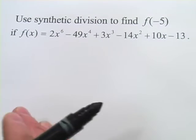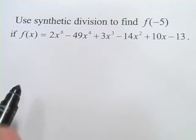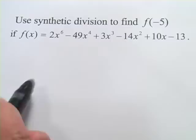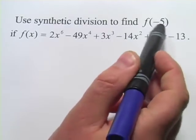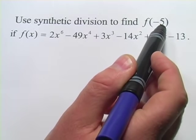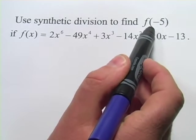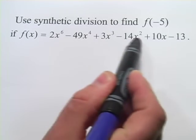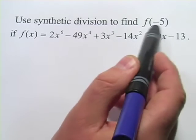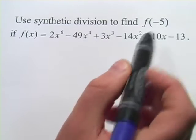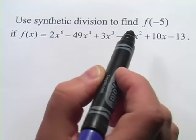This one says use synthetic division to find f of negative 5. And this comes from something called the remainder theorem, which is pretty neat. What this means is that if you actually use synthetic division and divide by this number that we're searching for, the remainder will be the solution. So if you took negative 5 and plugged it into this 6th degree polynomial, you would get the same number as if you used synthetic division and divided it by negative 5 and took the remainder.